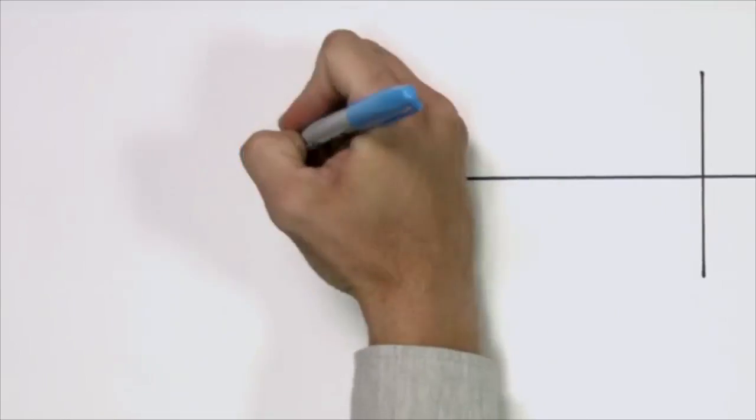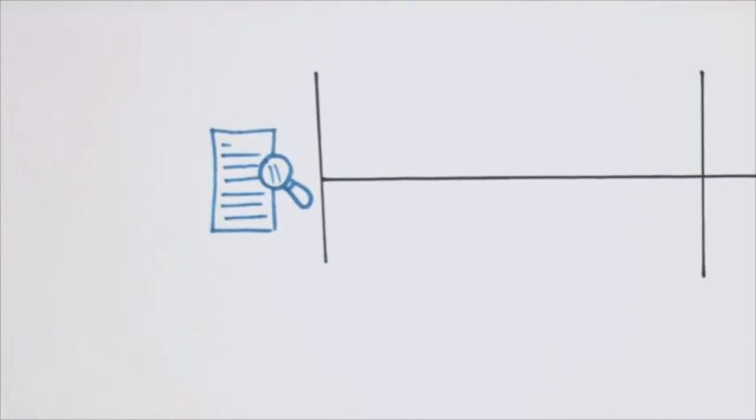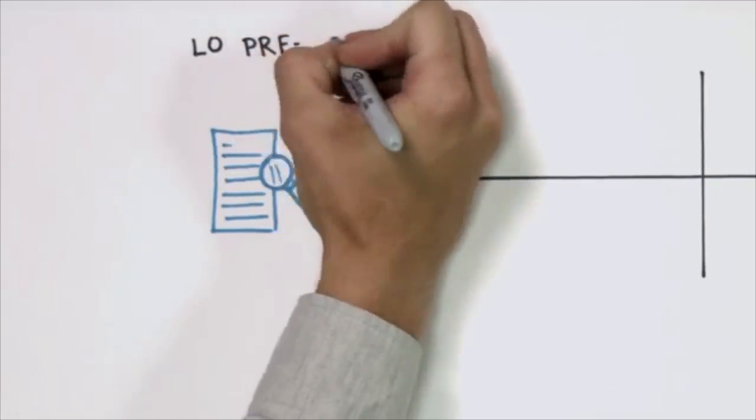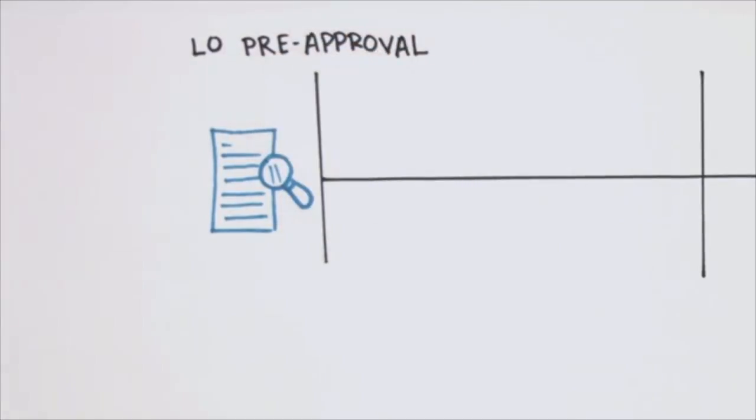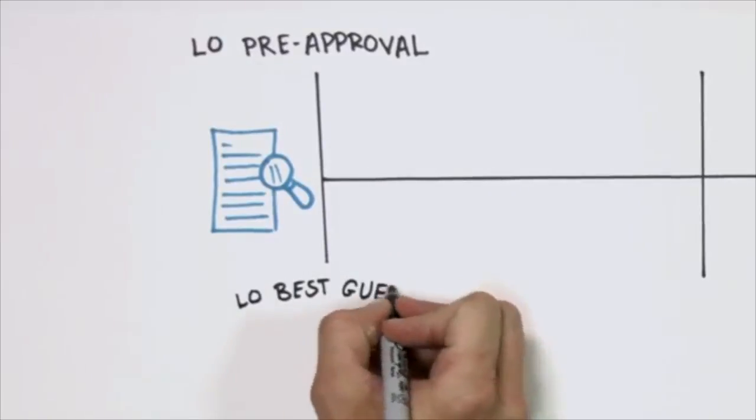So here's what happens in the old model. You go to your lender, loan officer looks at some version of the package, maybe pulls credit, they issue a pre-approval letter. Really what's happening there is that loan officer is giving you a pre-approval based on their best guess.